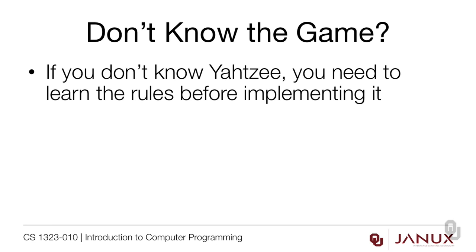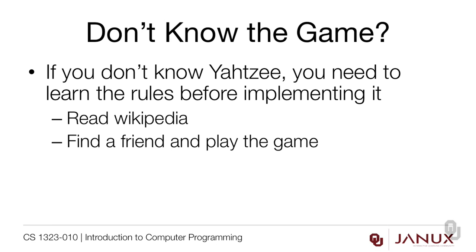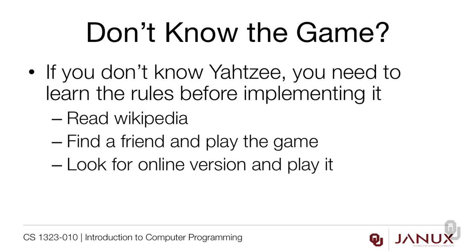If you don't know Yahtzee, you need to learn the rules before implementing it. Never try to program something you don't understand — it doesn't work. Reading Wikipedia is one place to start, but there are other options too. One is to find a friend and play the game; it's a very common game in the United States. You could also look for an online version and play it. Make sure you know the rules before trying to proceed.